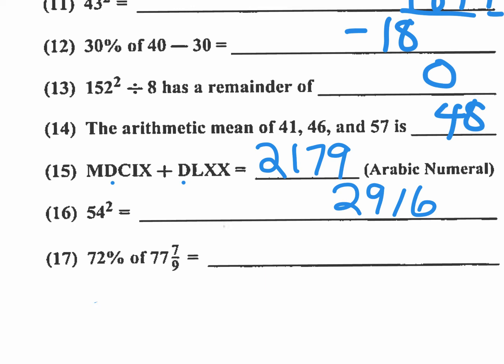Number 17 is the last problem on this column. And 72% of 77 and 7/9. So one way to look at this is take 72 times 77 and 7/9. It doesn't matter where the percent is, but I'll move it to the other number. And I know that 77 and 7/9% is 7/9. So all I have to do is take 72 times 7/9. 9 goes into 72 8 times and 8 times 7 is 56.